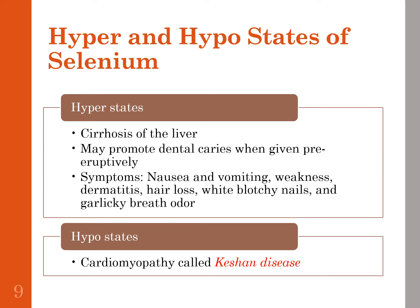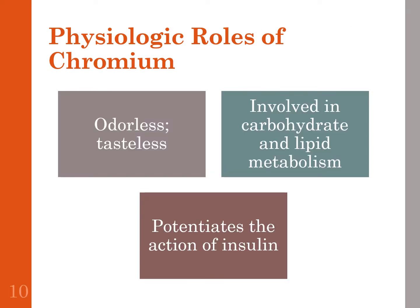Selenium toxicity or deficiency is not commonly seen in people today since most societies share food from diverse sources. Moving on to chromium — it is odorless and tasteless and is involved in carbohydrate and lipid metabolism because it potentiates the action of insulin. While this suggests it might benefit type 2 diabetics, the evidence for chromium supplementation in that population has not shown good results.